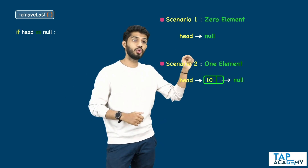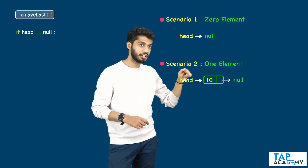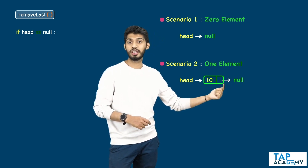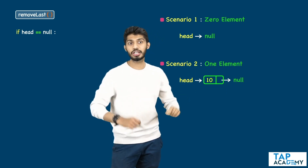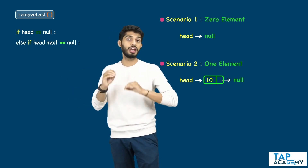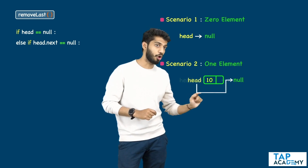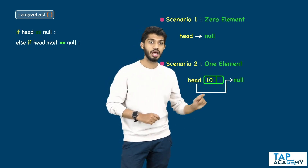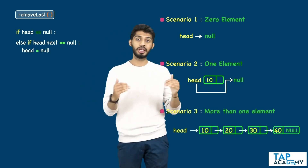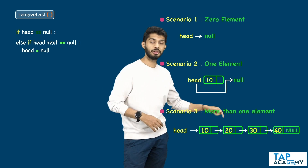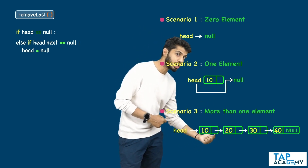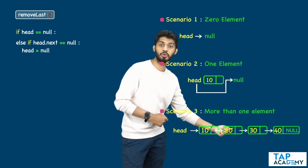The next scenario is when there is one element. How do I know there is one element? If head.next is equal to null, then it means there is only one element. So I need to check: else if head.next equals null. If it is equal to null, head should start pointing to null — I set head equal to null. The next scenario is the main scenario: when there are more than one elements. If head.next is not equal to null, it definitely means there are more than one elements.